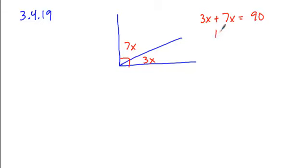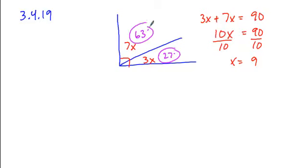And we can go ahead and combine our like terms, divide by 10 and solve for x. Once we have our solution for x, again it's not the answer to the problem, it simply allows us to plug in 3 times 9 which is 27 degrees, 7 times 9 which is 63 degrees and we get our solutions.